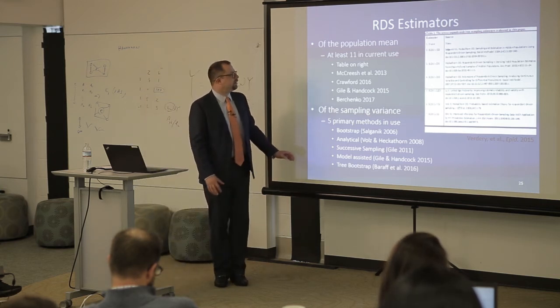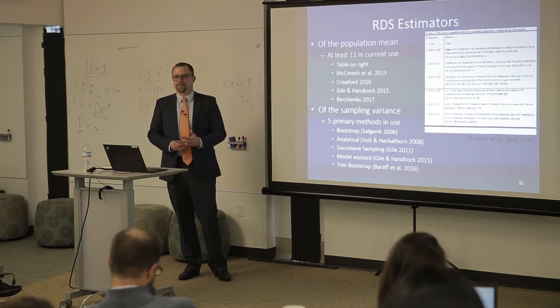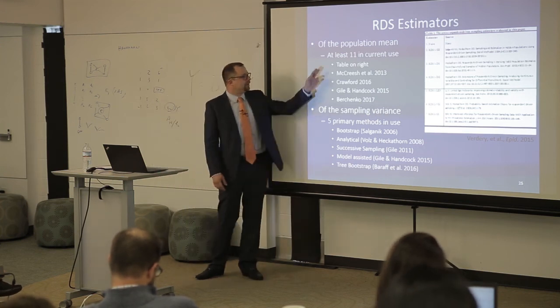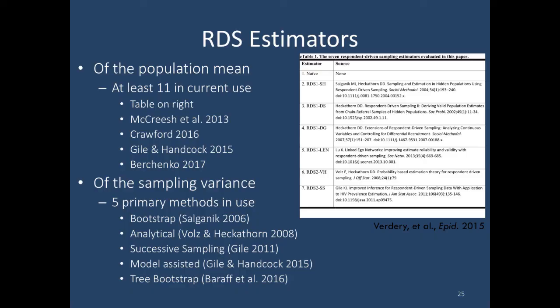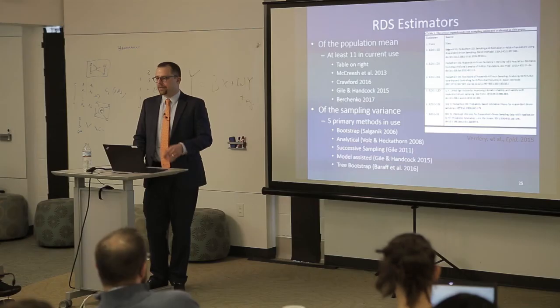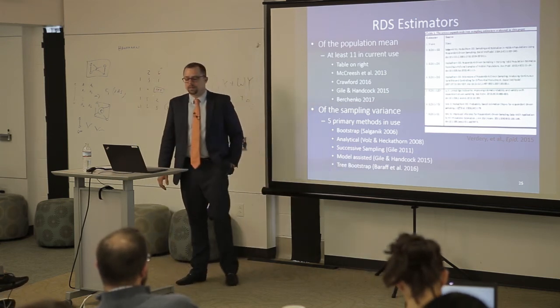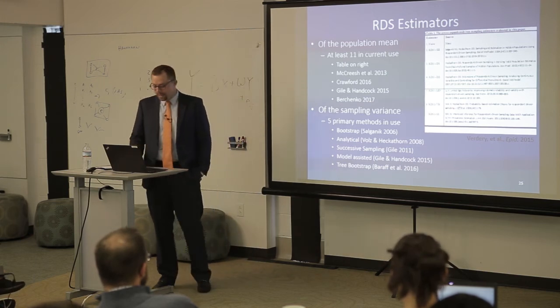There are a number of RDS estimators in use — I know of 11 for estimating the population mean. Most of them use the degree-based weight, but some newer ones like the Crawford estimator and the Berchenko estimator are using time dynamics of recruitment to model it as an epidemiological process to get better estimates. There are also several estimators of sampling variance, and most of them work very poorly. But a recent bootstrap procedure paper seems to be working very well — if you want accurate confidence intervals, I suggest looking up that paper which has associated code to calculate tree bootstraps.